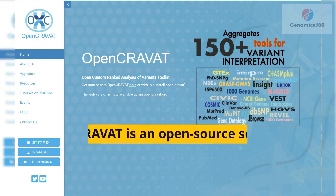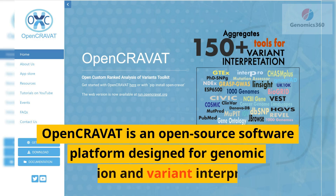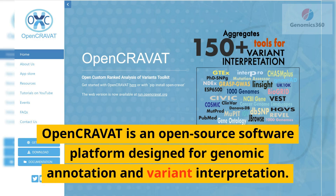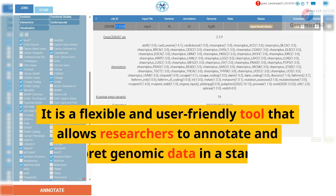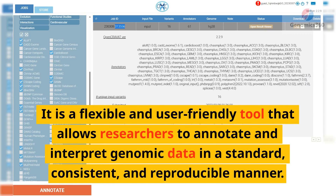OpenCRAVAT is an open-source software platform designed for genomic annotation and variant interpretation. It is a flexible and user-friendly tool that allows researchers to annotate and interpret genomic data in a standard, consistent, and reproducible manner.